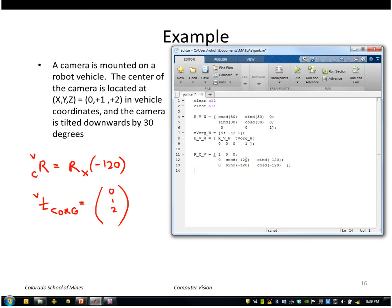sine of minus 120 and cosine of minus 120. The translation of the camera's origin with respect to the vehicle is 0, 1, 2. So the 4x4 matrix from camera to vehicle is rotation from camera to vehicle, translation of camera origin with respect to vehicle, and then 0, 0, 0, 1.